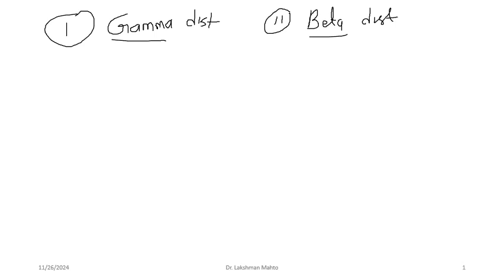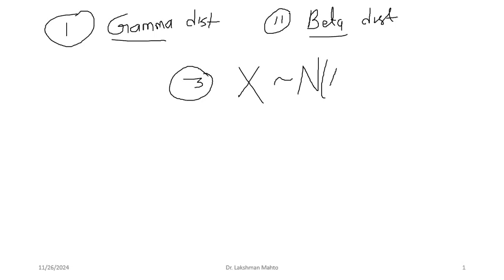You should revise beta and gamma distributions when taking any elective course in machine learning with a Bayesian framework. Now today we will discuss in detail the normal distribution — a continuous random variable distributed normally with mean mu and variance sigma squared, and the corresponding density function defined in terms of mu and sigma squared.